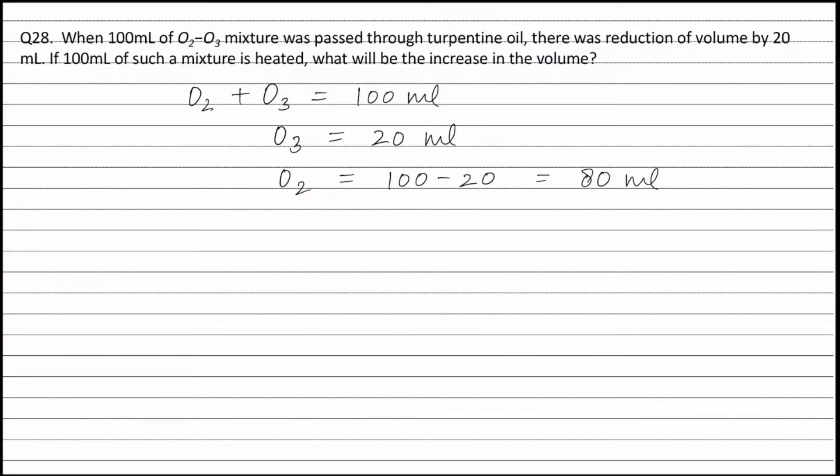Now, on heating the 100 ml mixture of oxygen and ozone, ozone changes into oxygen. The balanced equation for the reaction is O3 on heating forms 3/2 O2.